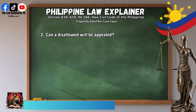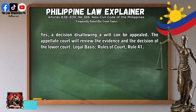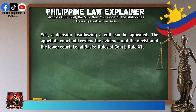Question 2: Can a disallowed will be appealed? Yes, a decision disallowing a will can be appealed. The appellate court will review the evidence and the decision of the lower court. Legal basis: Rules of Court, Rule 41.